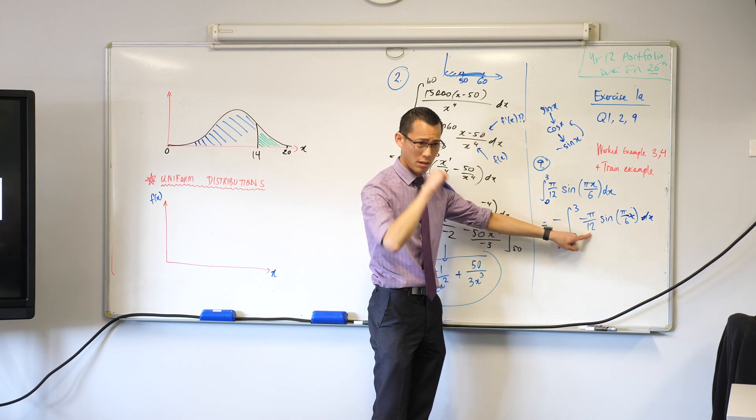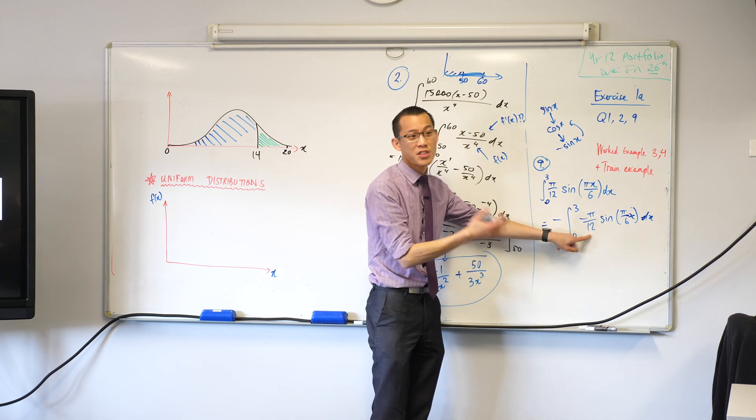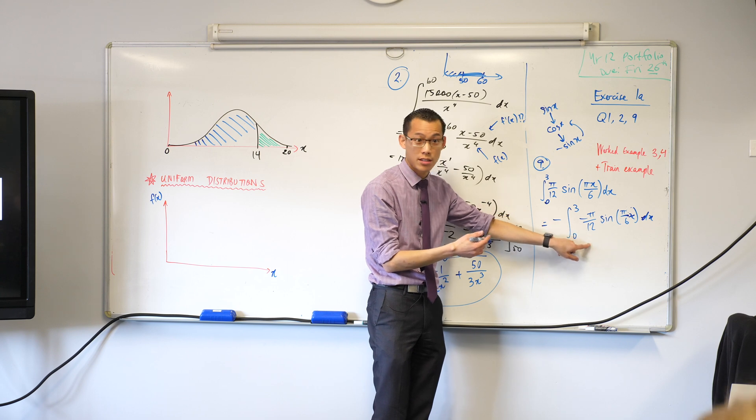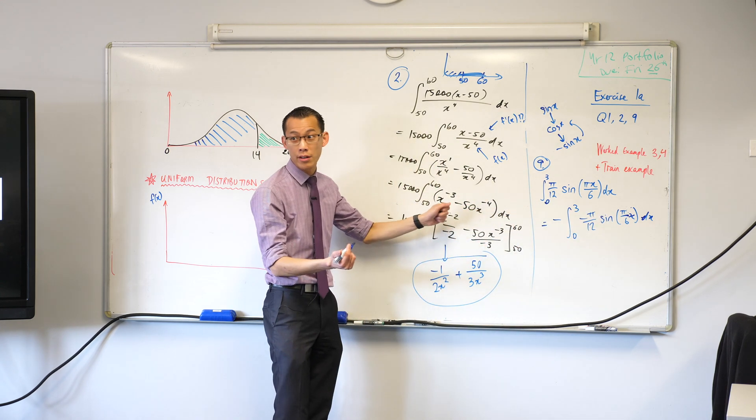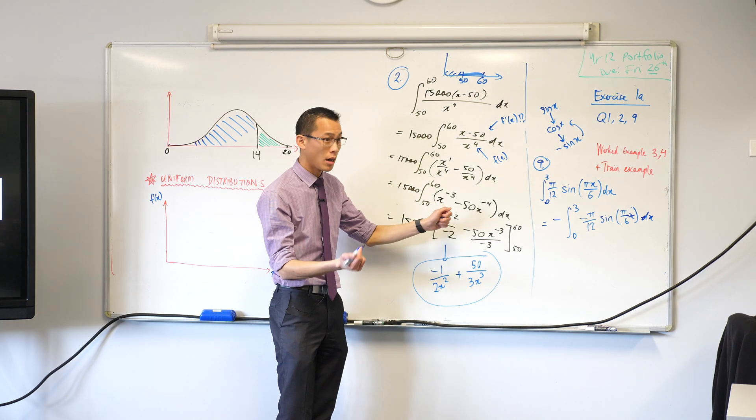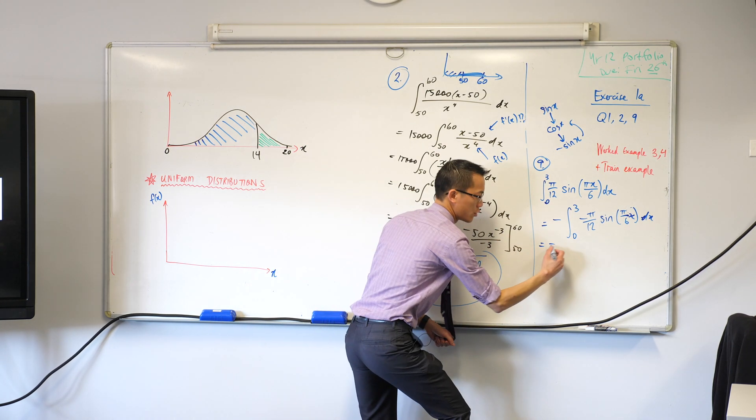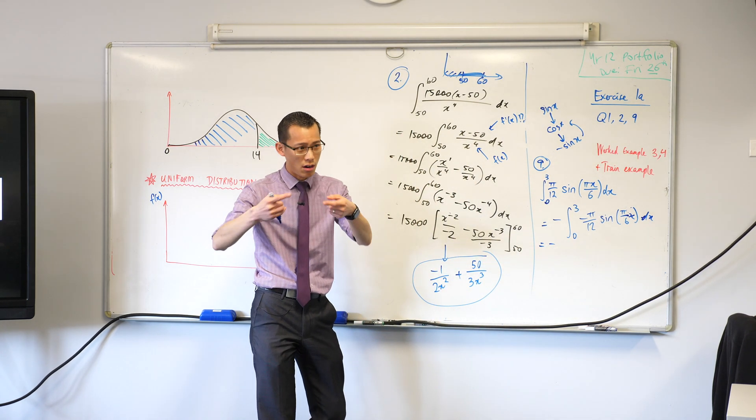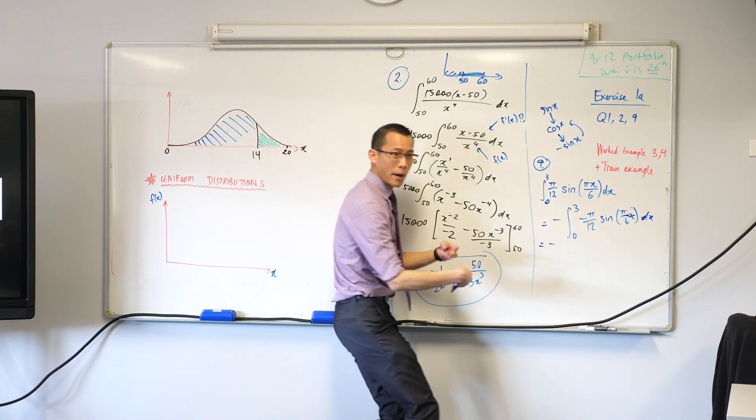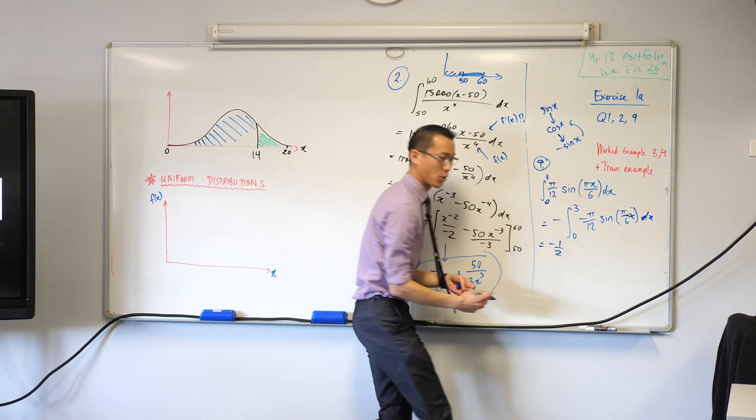So therefore this guy here would have come out the front when I did chain rule. So I want a pi on 6 to be there, it's not a pi on 6. So how do I turn this into a pi on 6? What can I factorize out to make that a pi on 6? A 2, right. But just be careful with your 2 because it's a 2 that's on the denominator. Do you see that the denominator is bigger than I want it to be?